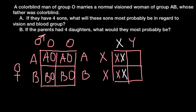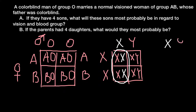All male progeny in her family were normal. As you can see, 100% of the girls in her family are obligate carriers of this genetic disorder. Now we can finally solve our problem. We know the genotypes of both parents: the father is affected, so his genotype is X(defective)Y.